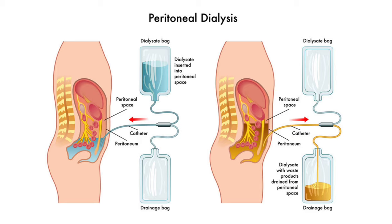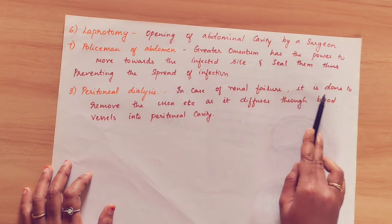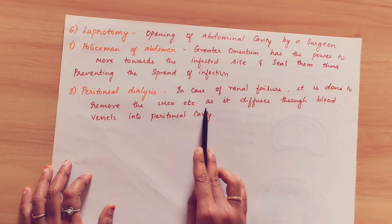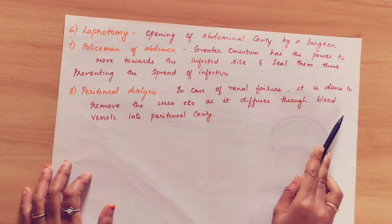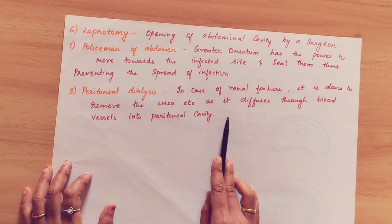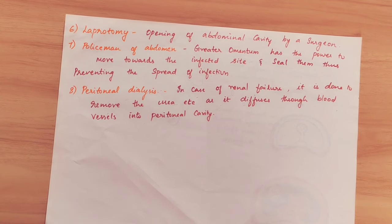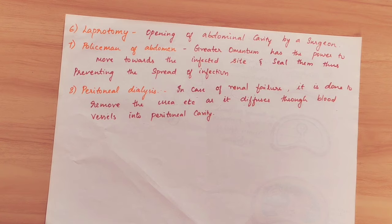In case of renal failure, peritoneal dialysis is done to remove urea and other waste products as they diffuse through blood vessels into the peritoneal cavity. So this is all about the peritoneum. In the next video, we will see about the lesser and greater omentum. Thank you for watching.